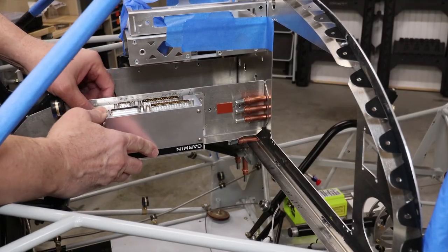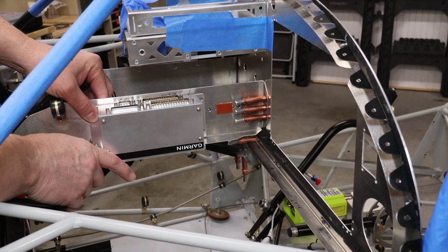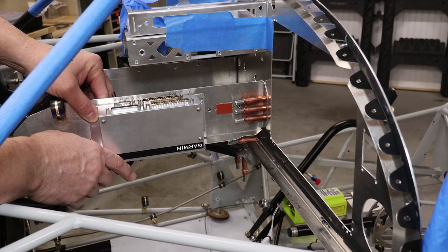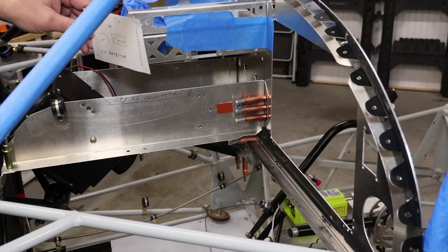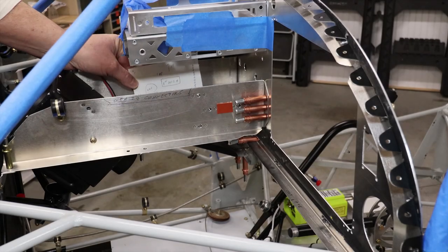This is where the Garmin GEA24 engine interface unit is mounted with the connectors facing up. Then on the other radio plate I'll mount the carbon monoxide detector, which I haven't bought yet because they have a fixed service life.